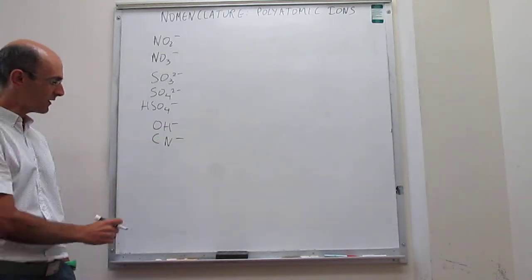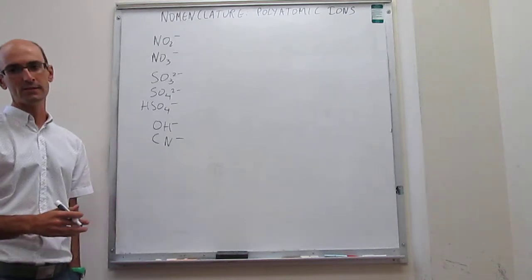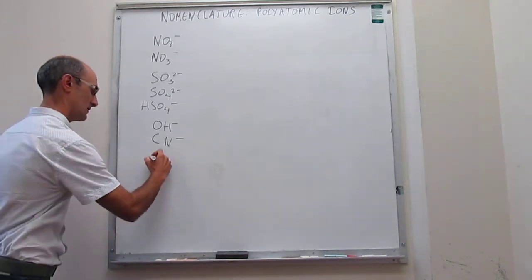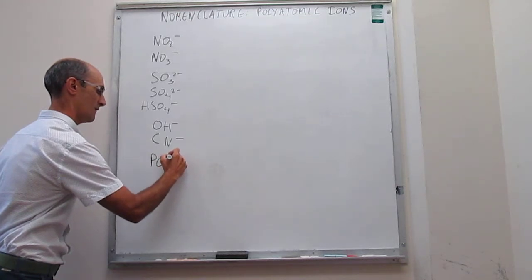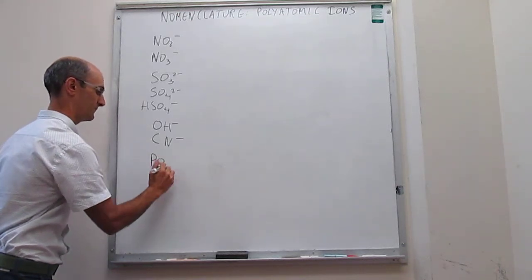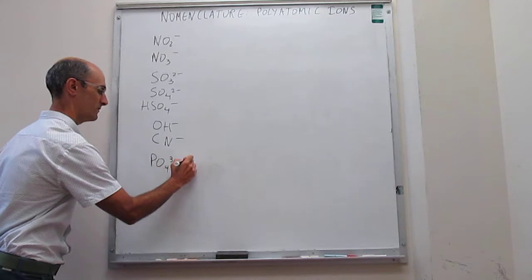And then we start naming here three polyatomic ions that contain phosphorus. So PO3-3-, PO4-3- that is phosphate.